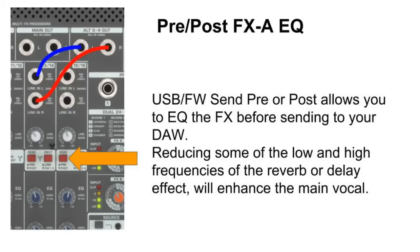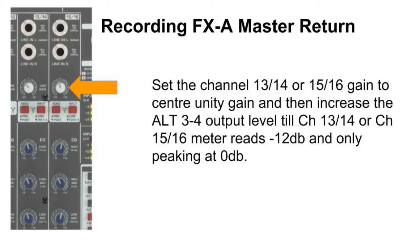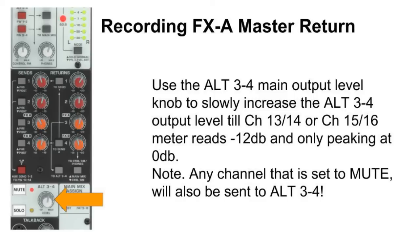Use the Send Pre-Post button to select whether the signal is sent to your DAW with or without EQ processing. Make sure the Input Gain knob for channels 13, 14, 15, or 16 is set to 0 dB unity. Adjust the Alternate 3-4 main output level and monitor the channel meter to read around -12 dB, only peaking at 0 dB. By recording the chosen channel in your DAW, you will be recording only the output of the FX-A module, which you can then use in your mixing session.